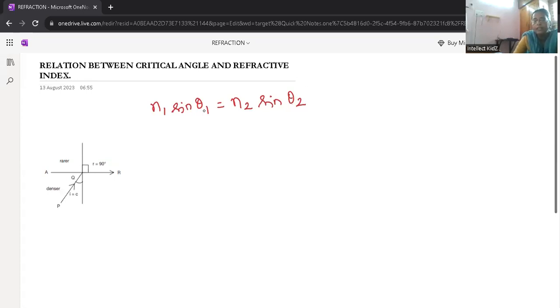The critical angle is the incident angle. So critical angle and refractive index, is there any relation? Critical angle occurs when light travels from denser medium to rarer medium. So denser medium is medium 1, and this is rarer medium, medium 2. Refraction at the boundary will occur at 90 degrees.